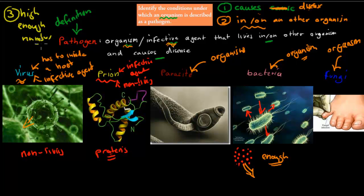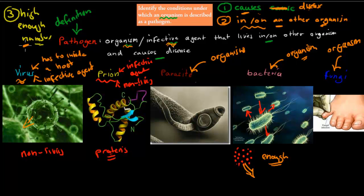That might mean for a mosquito it could transmit disease by itself, whereas bacteria often have to wait for high numbers, and fungi sometimes as well. So to summarize: name the conditions under which an organism is described as a pathogen. The definition of a pathogen is any organism or infective agent that lives in or on other organisms and causes disease. First condition: it has to be able to cause disease. Second condition: it has to be living in or on other organisms. Third condition: they have to have high enough numbers to actually have an effect. If all these are present, then these are pathogens.